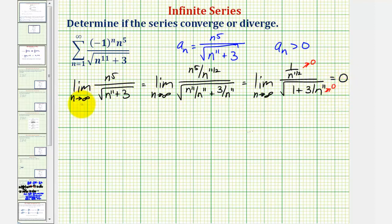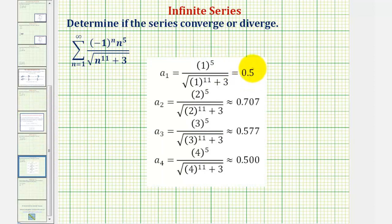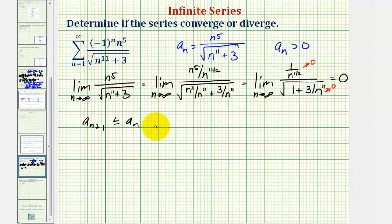For the last step, we need to show that a sub n plus one is less than or equal to a sub n. Looking at several terms using the formula for a sub n, notice that the terms actually increase from the first to the second term, but when n is greater than or equal to two, the terms get smaller and smaller — therefore a sub n plus one is less than a sub n. We just need to note that this is only true when n is greater than or equal to two.